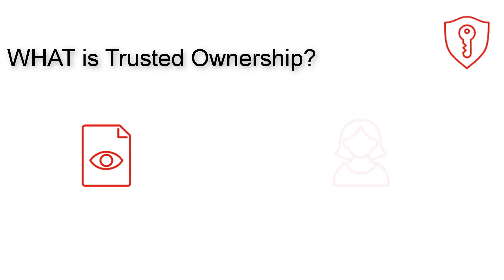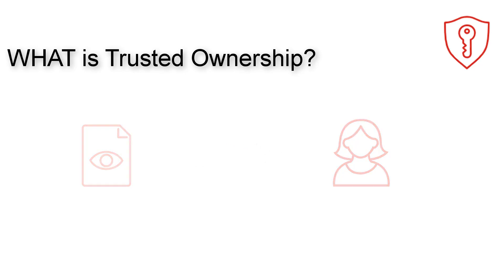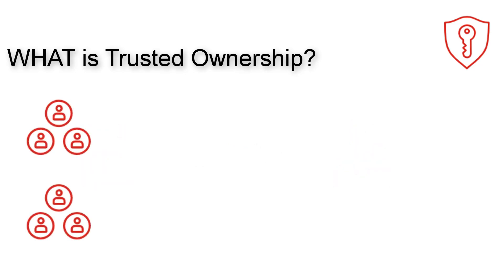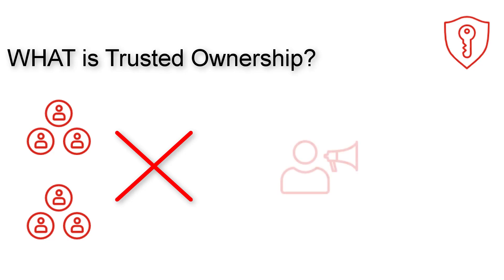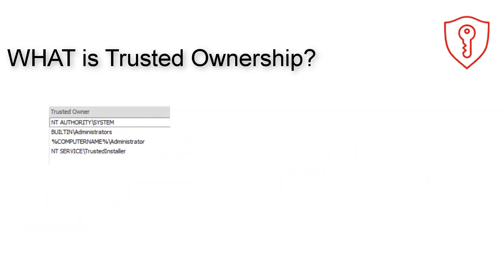So what is trusted ownership? Trusted ownership is a way application control can determine whether a file is allowed to run. It does this by looking at the file ownership — on Microsoft Windows, each file has an owner, and that is what is used to determine whether a file is allowed to run. Any user-introduced software is blocked by default, and any admin or trusted deployment system-introduced software is trusted and allowed by default.